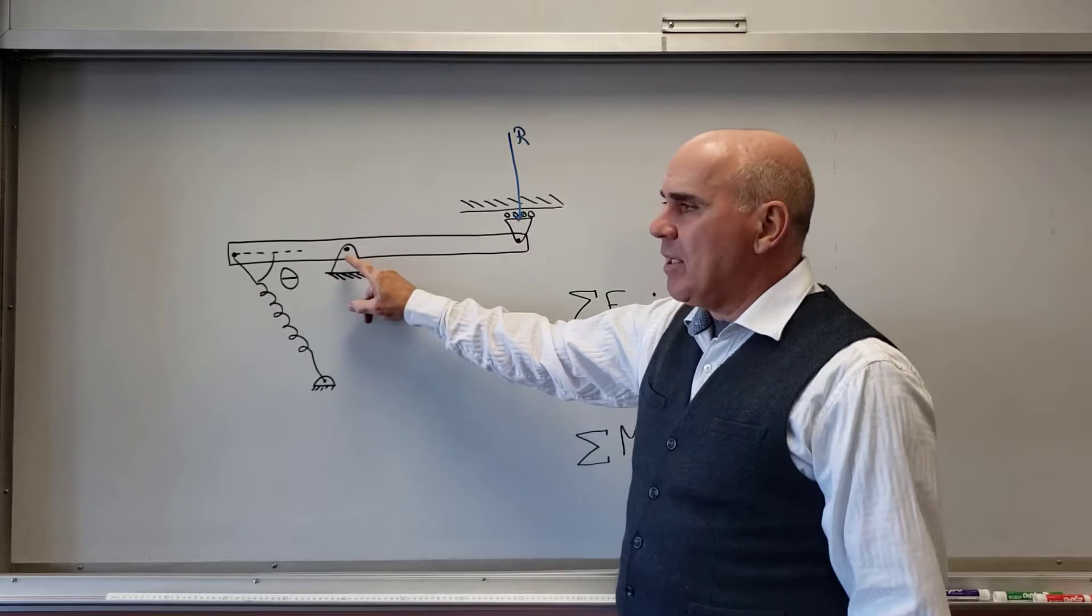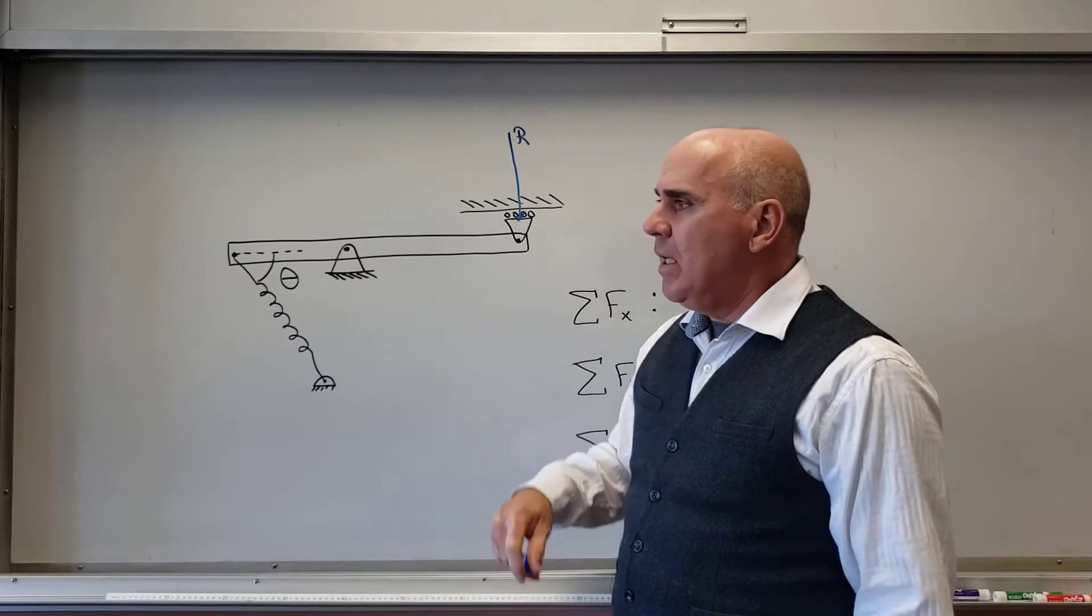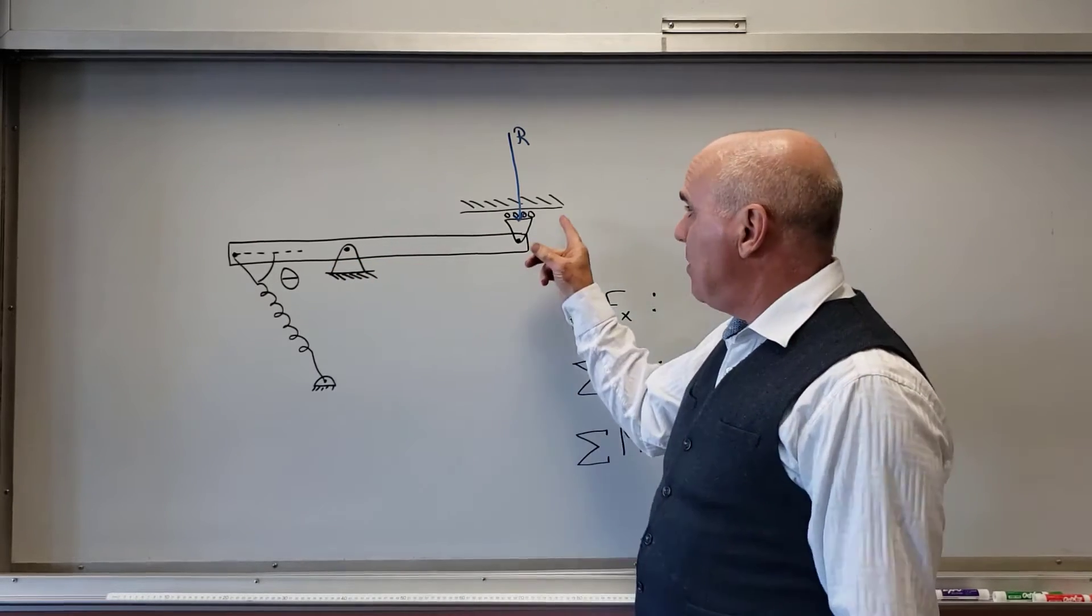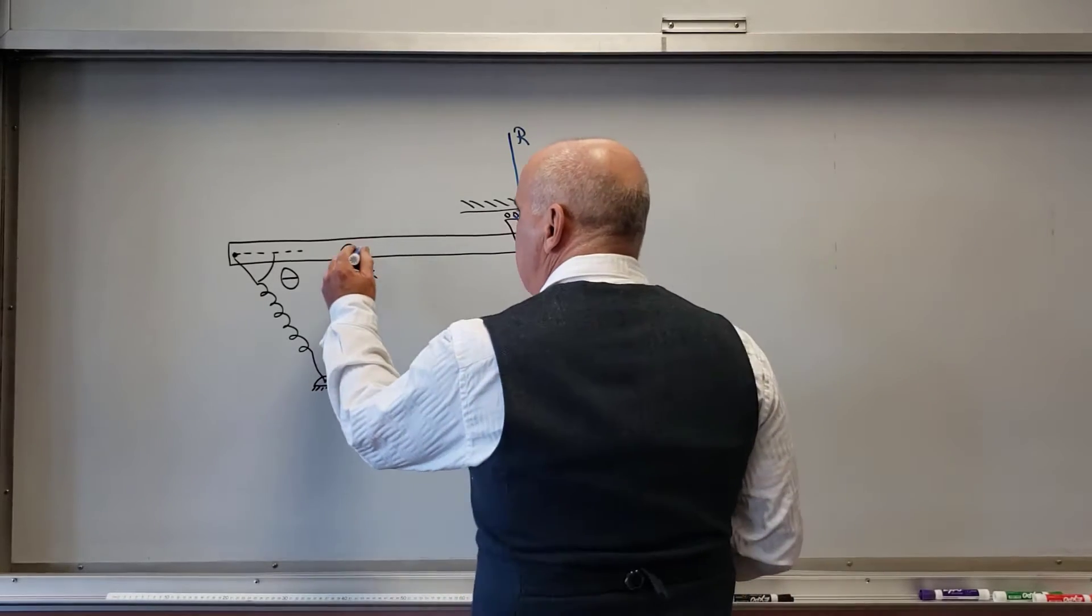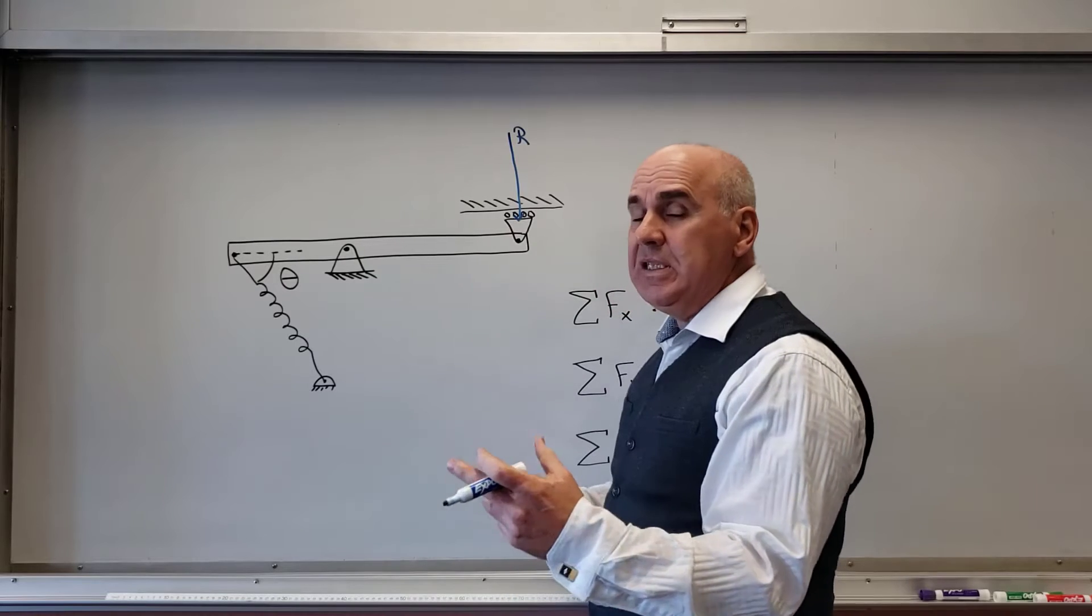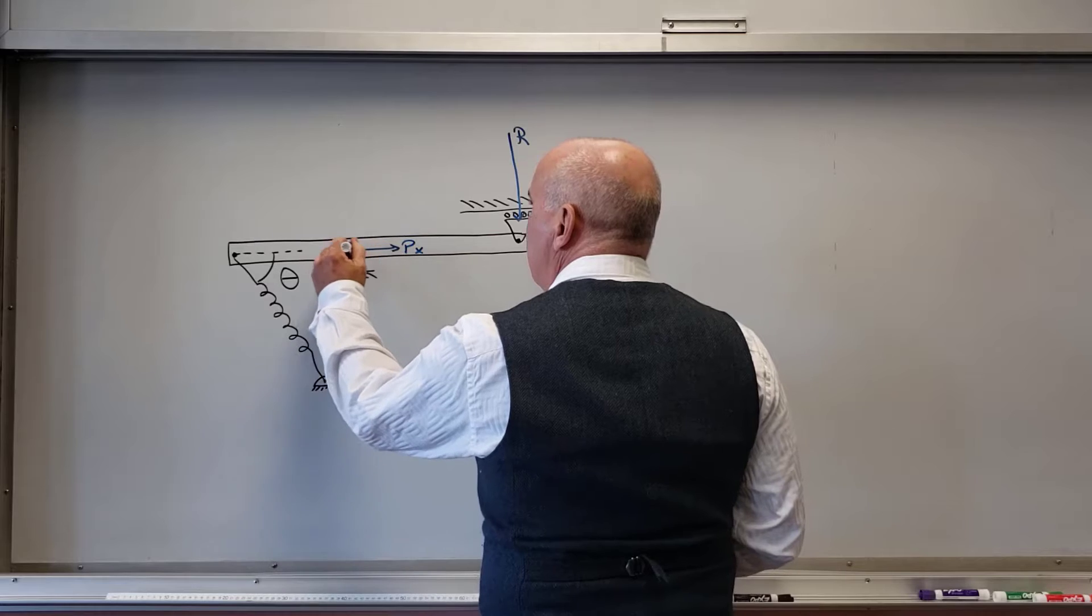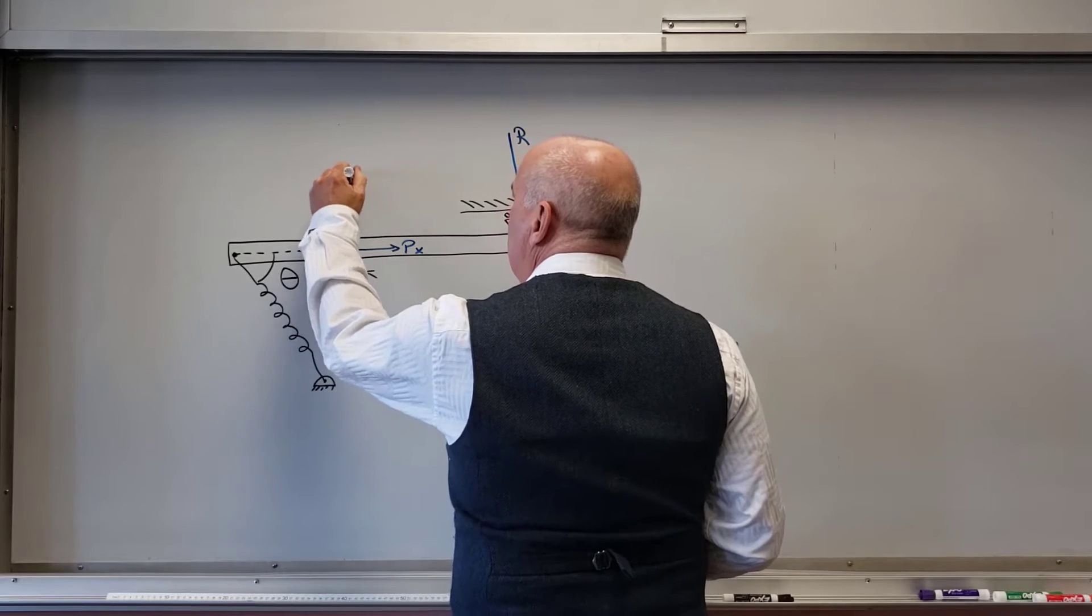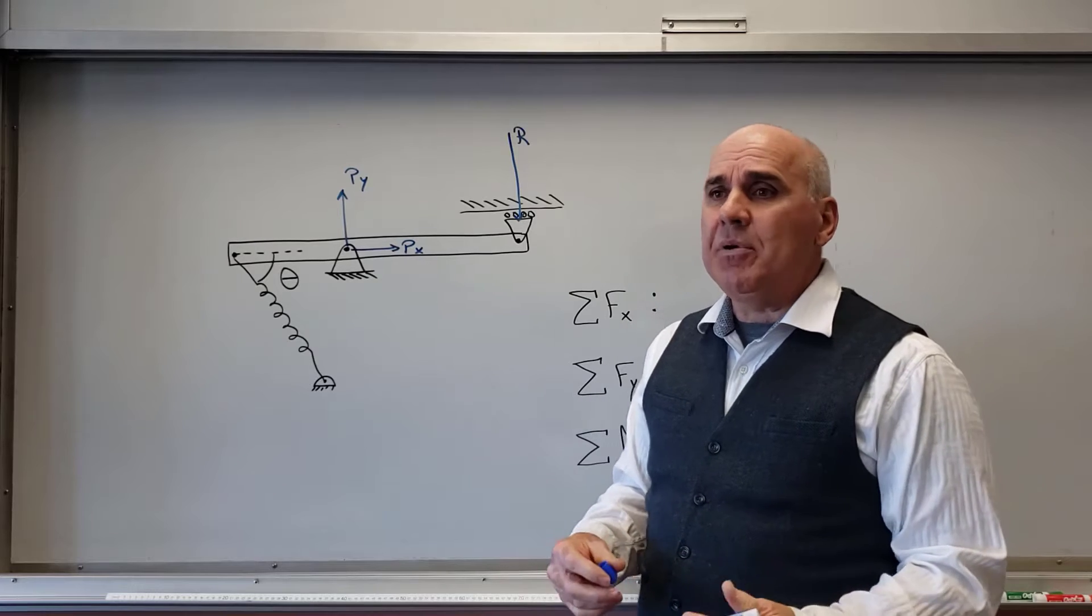And then over here I've got a pin acting on the beam. So this pin cannot exert a moment, neither can the roller. The pin cannot exert a moment and so it's going to only exert forces in the X and the Y. So it's a pin. So I'm going to call this P_X and I'm going to call this P_Y. And I've separated out into its X and Y component.